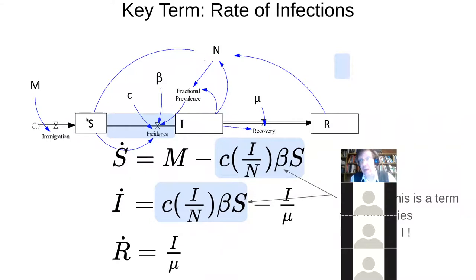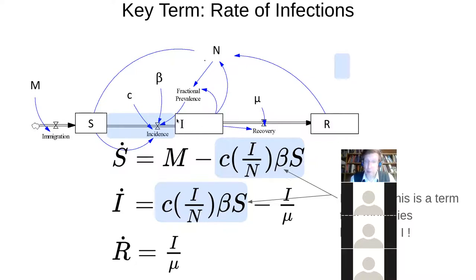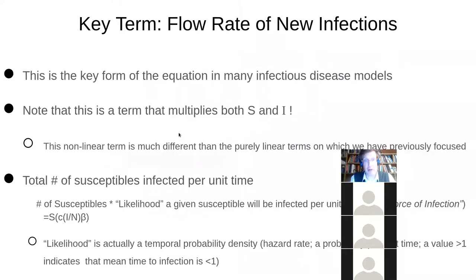So if you're susceptible, your chance of getting infected today depends on the number of infected people out there. By contrast, if you're in the infected state, your probability that you'll recover per day is just one over mu — it's just a constant. It doesn't depend on any other state variable.